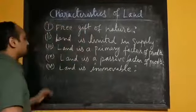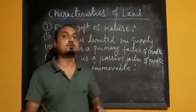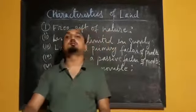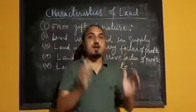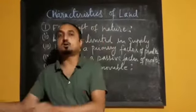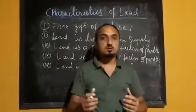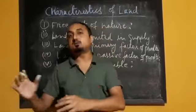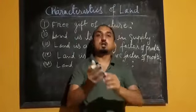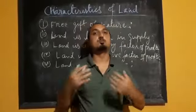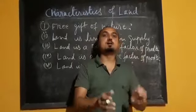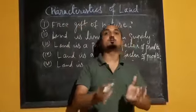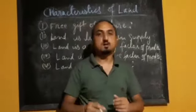The next important characteristic: land is immovable. Immovable means it is not possible to shift from one place to another or to transport from one place to another. For example, the land of Delhi cannot be shifted to Kolkata. So here we can see that land is an immovable factor of production.